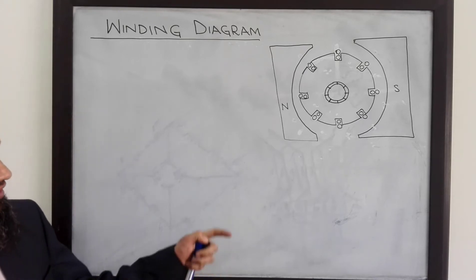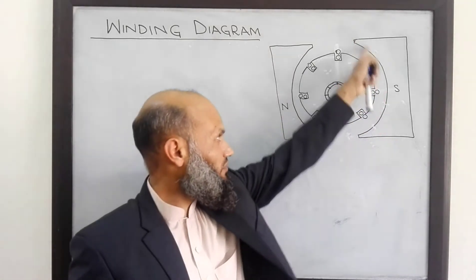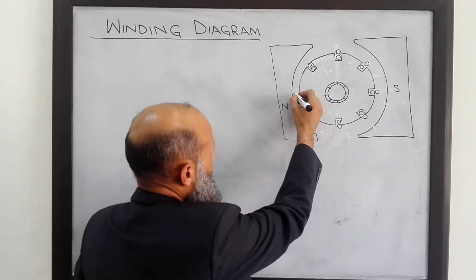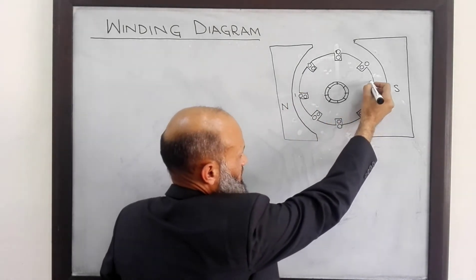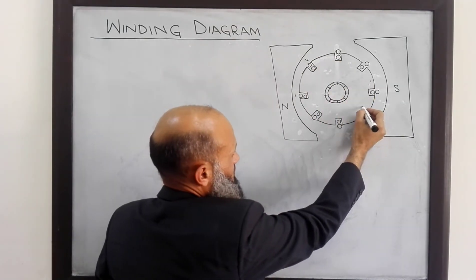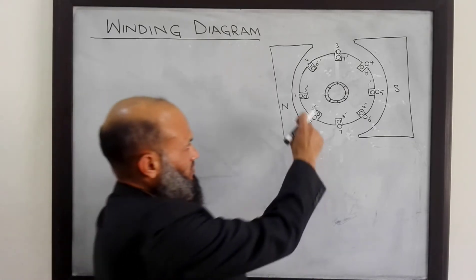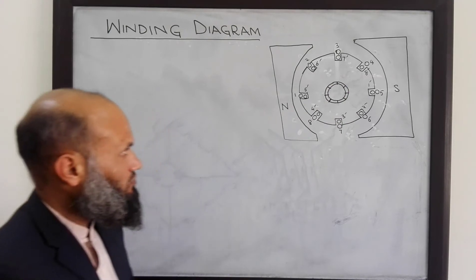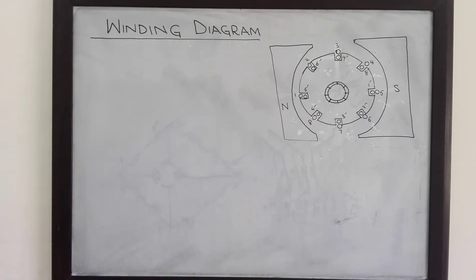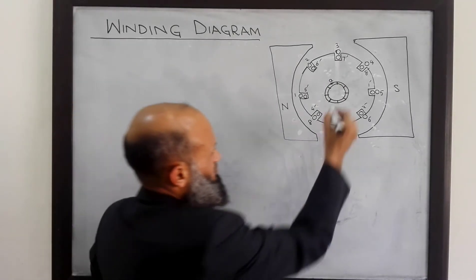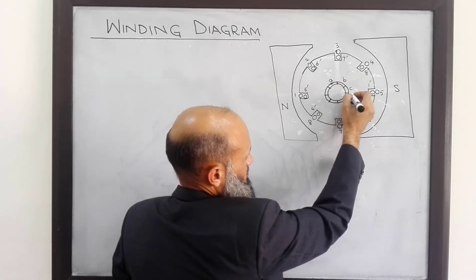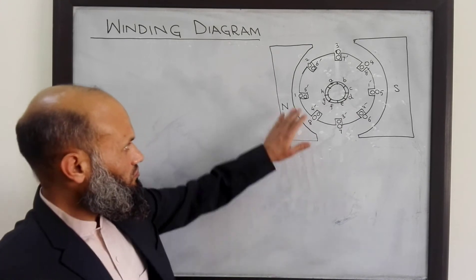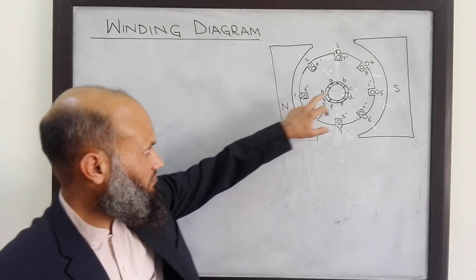Here we have a DC machine with north and south poles with curved pole faces and a rotor with eight coils. Let's number the coils: one and on the opposite side one dash, similarly two and two dash. Corresponding to eight coils, there should be eight commutator segments, which are shown here. Let's name these commutator segments: A, B, C, D, E, F, G, H.